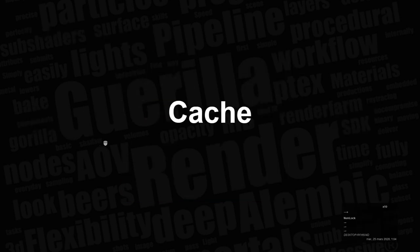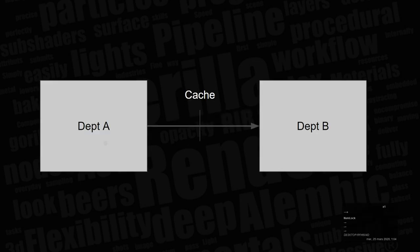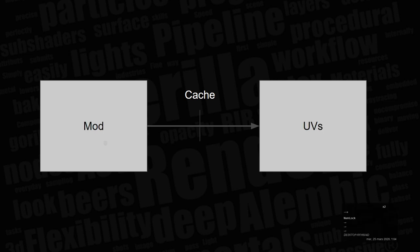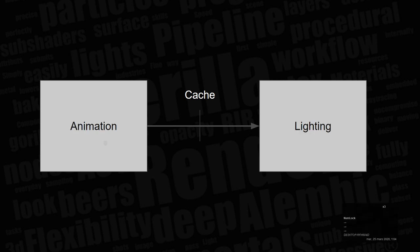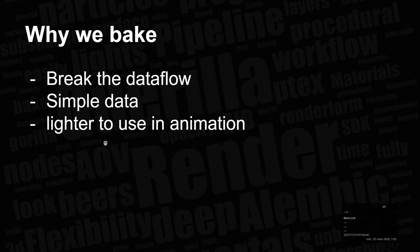We're going to use cache most of the time. What is the interest of using cache? It's data moving from one task to another or from one department to another. It can go from modeling to UVs or from animation to lighting. It's only geo — basically just position and normals per frame. We bake and use cache because we want to break the data flow. We don't want everything to be dynamic; we want to control everything.